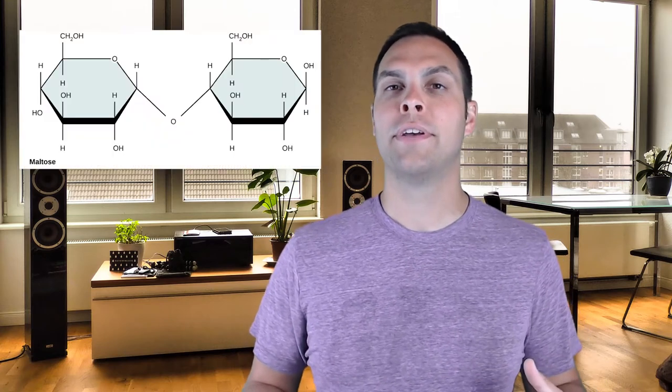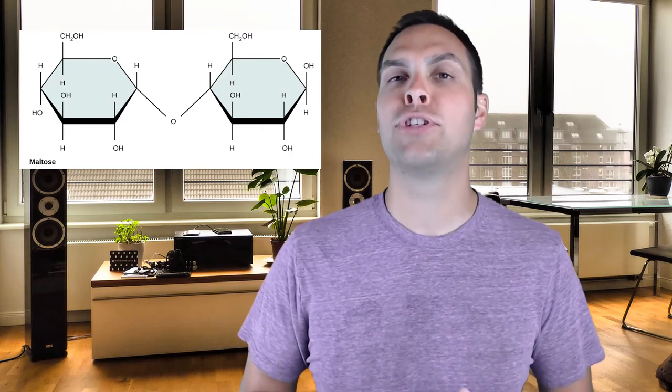What happens when we combine two monosaccharides together? Using an enzyme to perform a dehydration synthesis reaction — removing a water molecule — and linking two monosaccharides together produces a disaccharide. For example, linking one glucose to another glucose produces maltose, which has a not-super-sweet taste. If you've had malted milk balls or a chocolate malted milkshake, that's maltose — it's also responsible for the caramel flavor of darker beers and sodas.